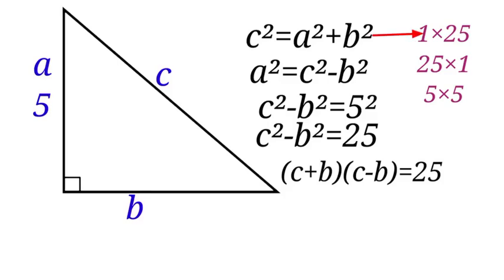For the first one, 1 for c + b and 25 for c - b, we cannot use this since c + b is less than c - b. Here we have 25 for c + b and 1 for c - b. This is the correct one.